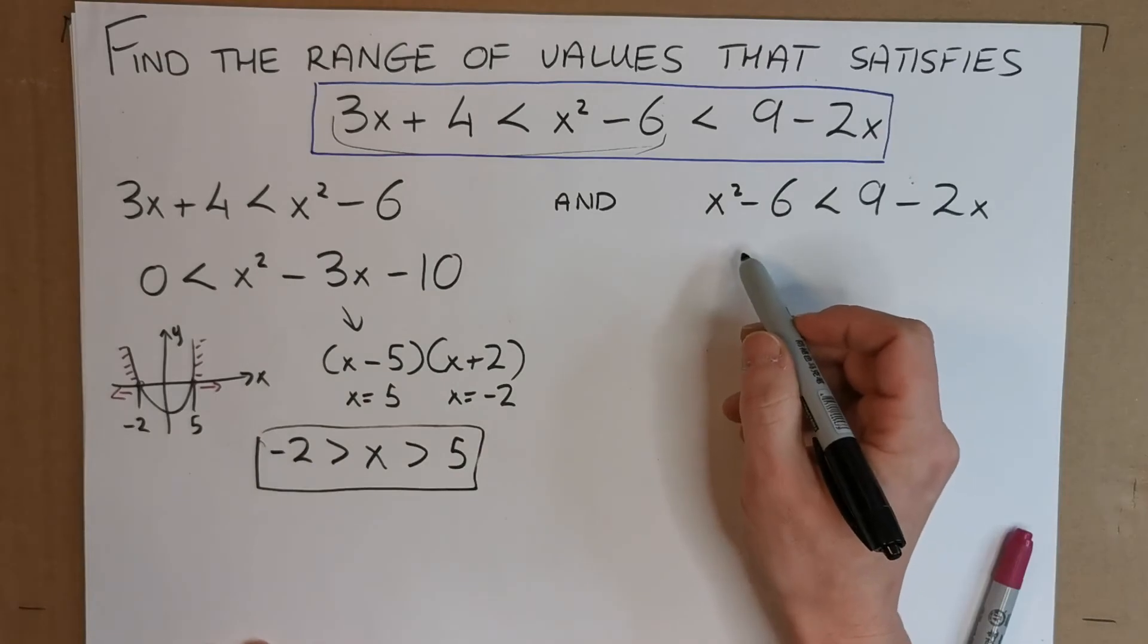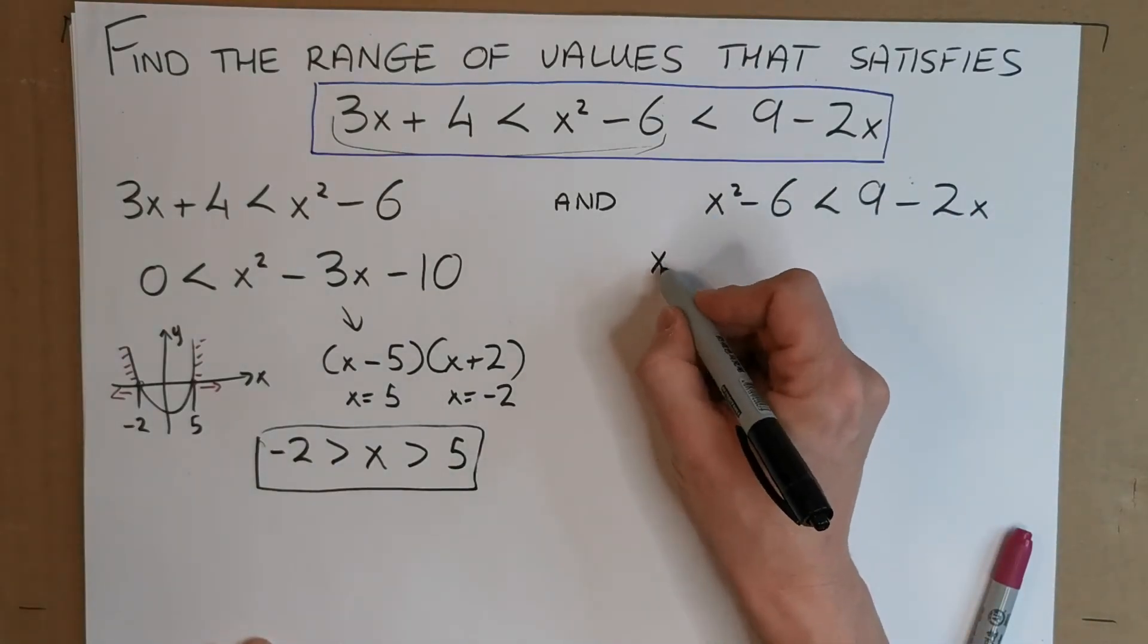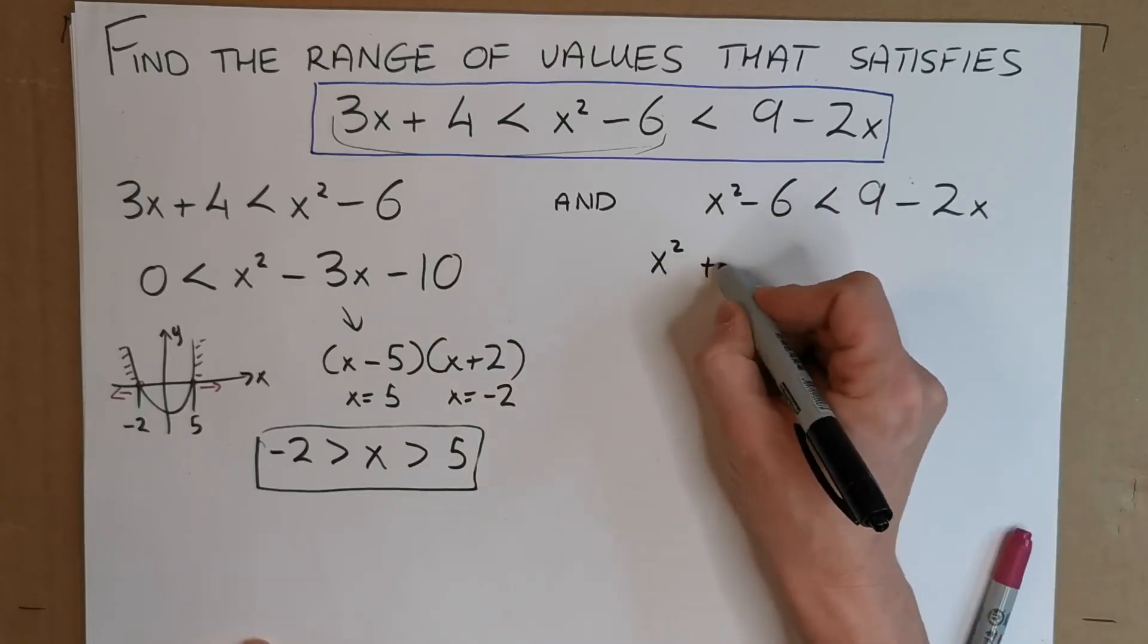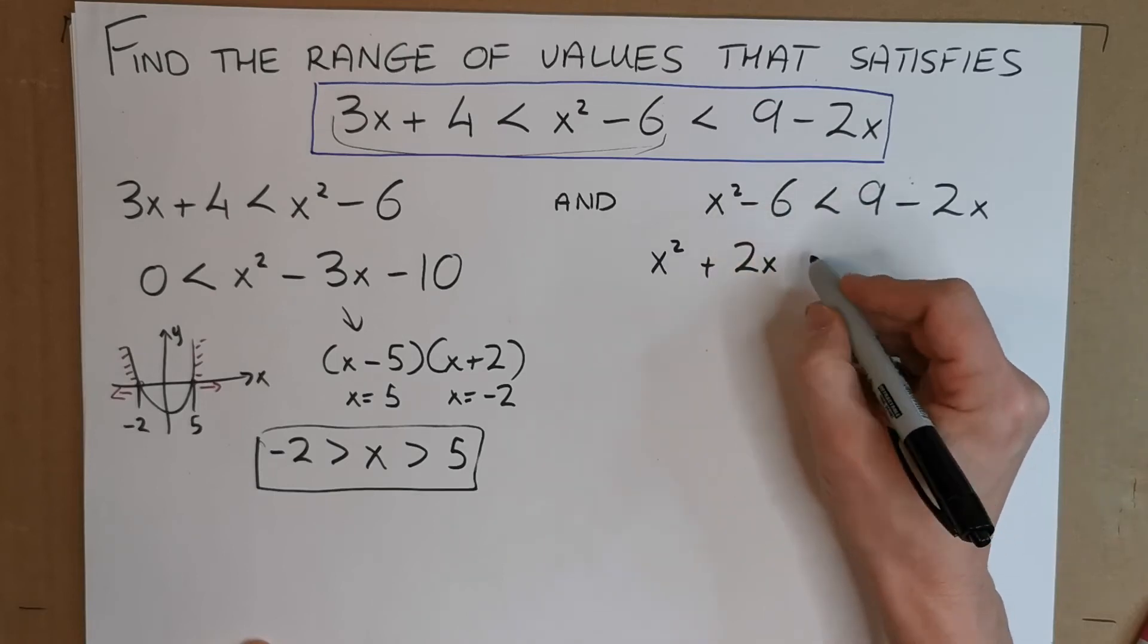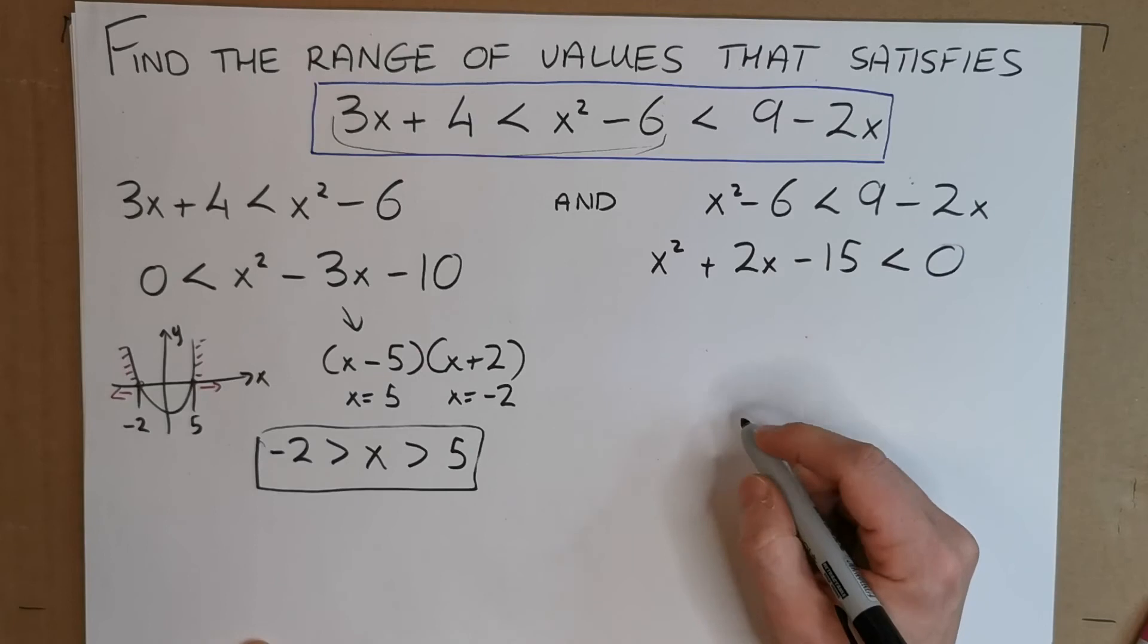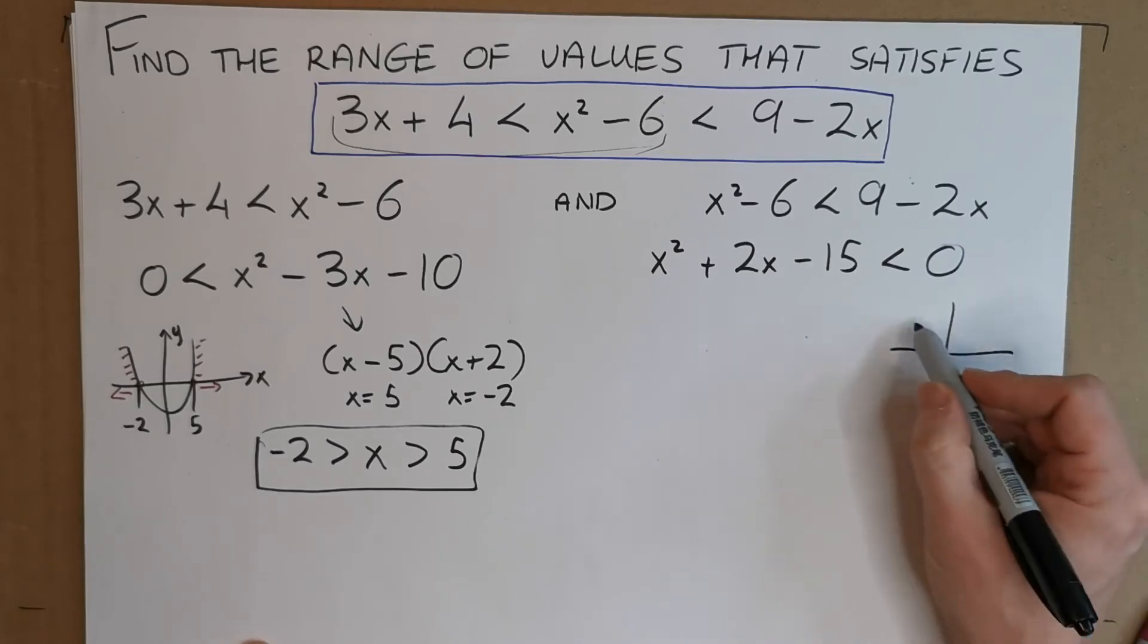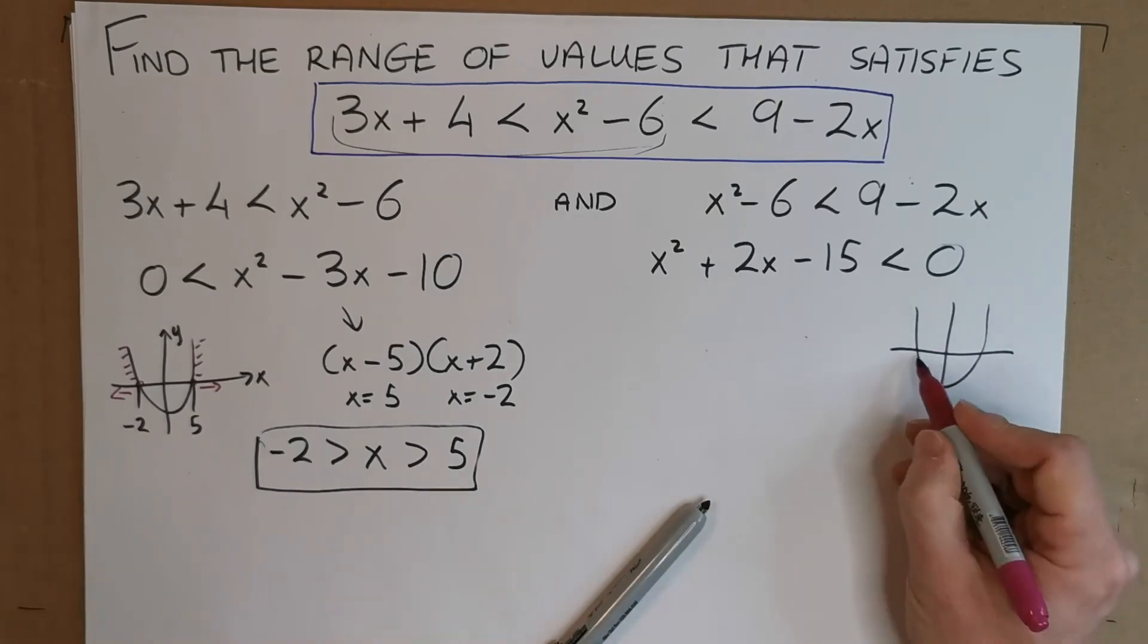A similar situation over here. So let's bring this stuff over to the quadratic. So we have x squared. That's going to become now a plus 2x. And we have minus 6. We bring over the 9, it becomes minus, that makes it minus 15. And we're left with less than 0. So now we have this quadratic graph again, and we want to know where is it less than 0, which is all this stuff down here.